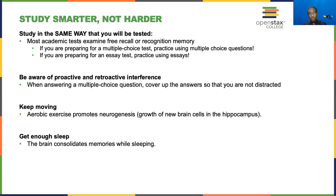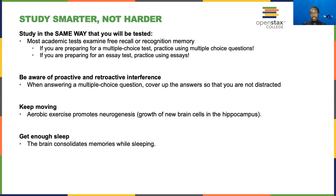Two other quick ways to study smarter, not harder: keep moving and get enough sleep. There's plenty of evidence showing that aerobic exercise promotes learning and memory by enabling the growth of new brain cells in the hippocampus. Getting enough sleep is also hugely important for consolidating memory and making it easier to remember.